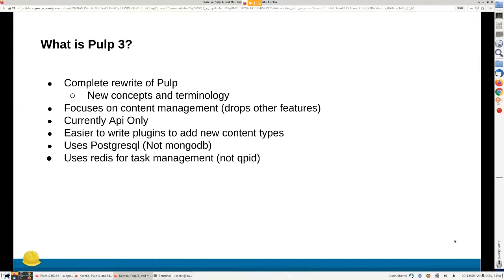PULP3 currently only has an API for accessing it — there's no CLI or UI. There is a desire to make a CLI in the future, but right now it is API only. It is a lot easier in PULP3 to write plugins and add new content types, and the hope is that there will be a community around it to write lots of plugins for lots of different things.